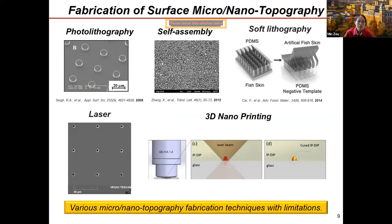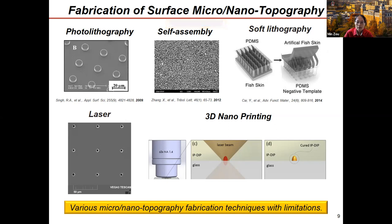There are different fabrication methods for surface micro-nano topography, each with benefits and drawbacks. Some are expensive, like laser or photolithography; cheaper methods lack good control over structure type and distribution. Some have limited material compatibility. Lately, a new technology called 3D nanoprinting allows any structure to be printed with fine resolution, enabling many surfaces to be fabricated. I'll give some examples in this talk.